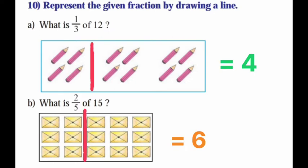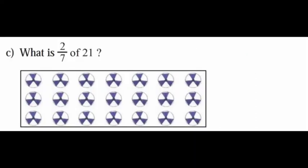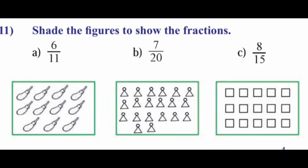What is 2 by 5 of 15? If you draw a line for 2 parts, 6 boxes. So that is equal to 6. C, what is 2 by 7 of 21? Draw a line for two rows. That is equal to 6. Next main.